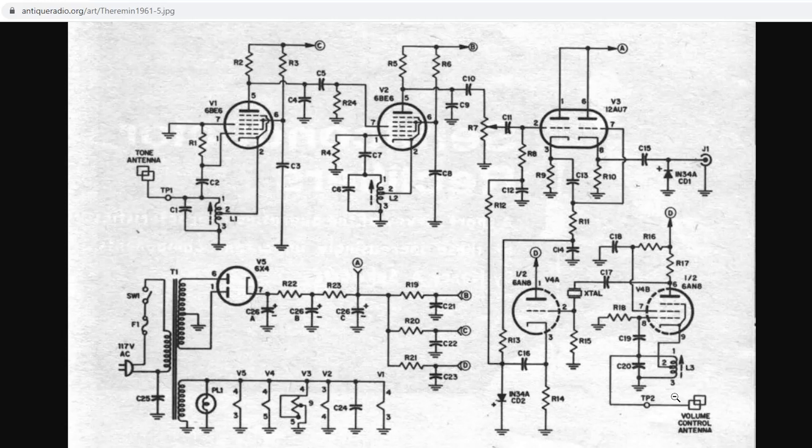We also have the same kind of setup here with an RF coil, a capacitor, and a volume control antenna that changes the frequency of the circuit as we move our hand closer to it. Now here's where the interesting part comes in. We have a crystal here. This crystal, in my case, is set at 500 kHz.